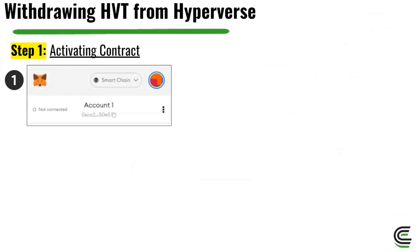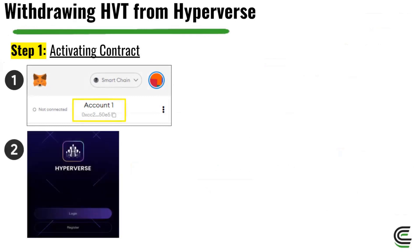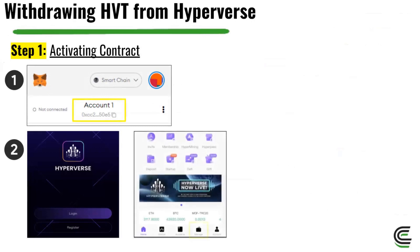Now that's complete, we need to activate your HVT contract. First, copy your MetaMask address and then head over to Hyperverse. Log in and go to Manage. Manage is where we can see all of your rewards, and we need to ensure that you have at least 30 HVT in your financial account in order to activate the contract. If you already have HVT, you'll be able to skip the next few steps.